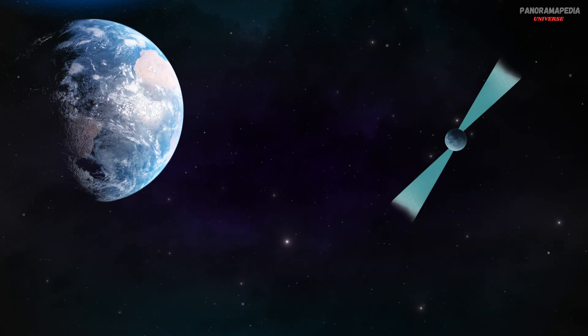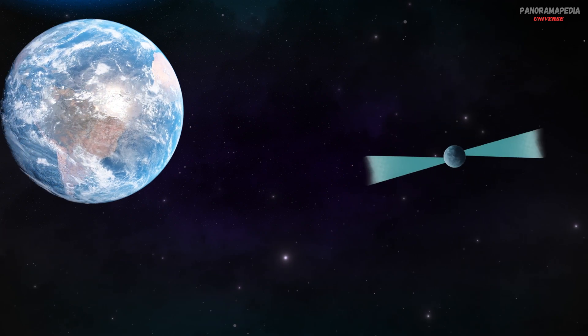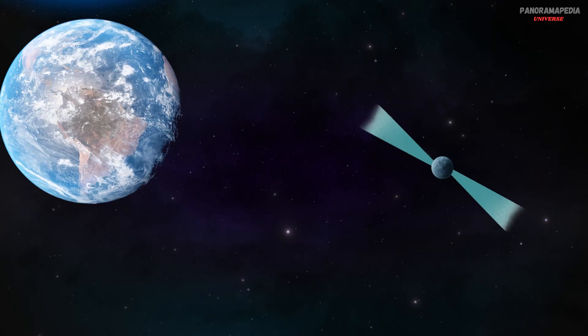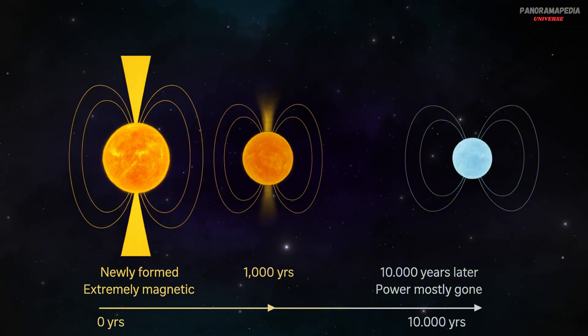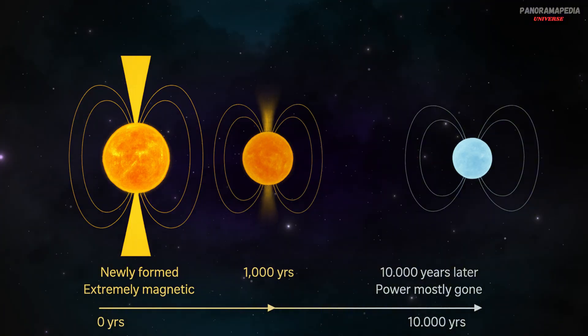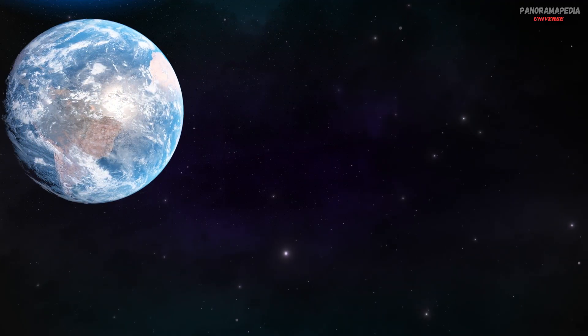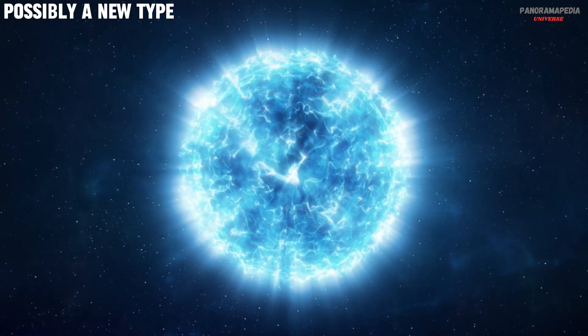Some theorists propose this object could be an ultra-long-period magnetar type that spins once every thousands of seconds, but is still active. The issue? Magnetars lose their power quickly, within about 10,000 years. A slow-spinning magnetar should be too old and cold to still produce radio waves this strong. And yet, this object was bright, predictable, energetic. Conclusion: could be a new type of magnetar, but it doesn't fit the ones we know.